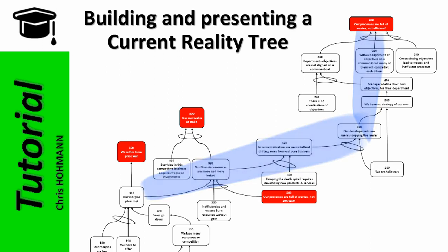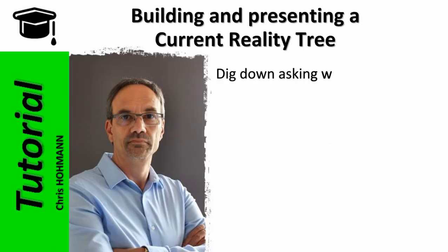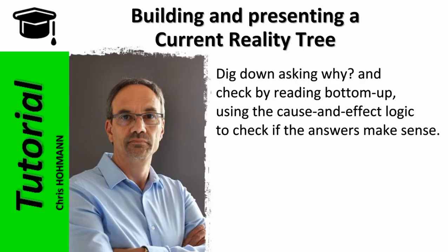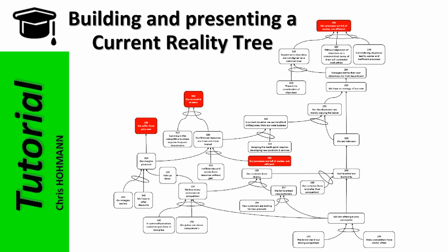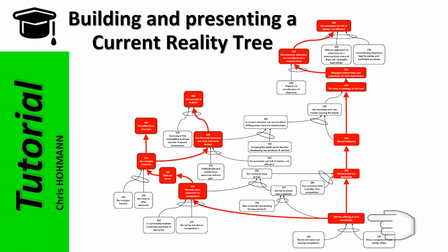We still need to dig deeper to uncover the critical root causes, but at that point you've got the idea: we dig down asking why, and check by reading bottom-up using cause and effect logic to verify the answer makes sense. To save time, here is the completed current reality tree. If you don't stay with me for the complete bottom-up reading, here are some important things about this current reality tree.